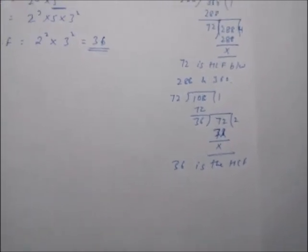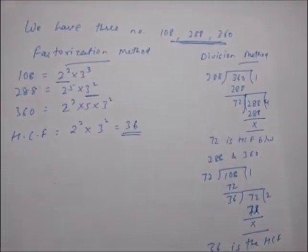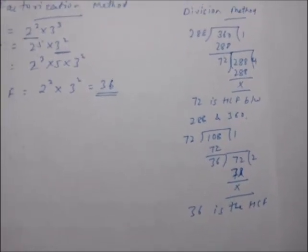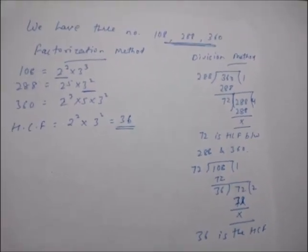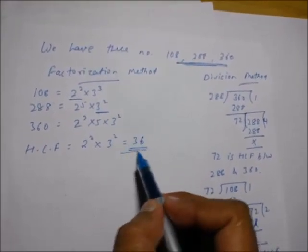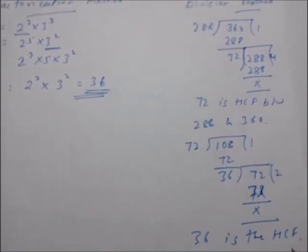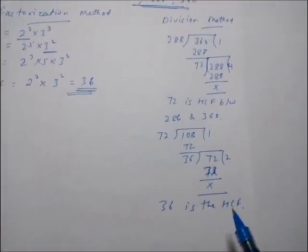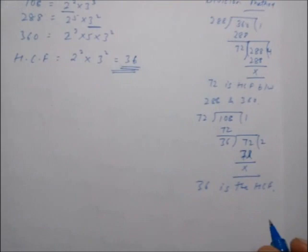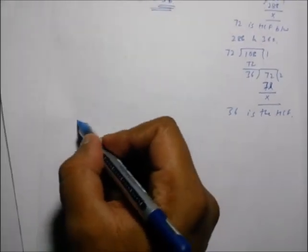As you can see, we calculated the HCF between three numbers by these two methods. The factorization method is quite the shortest, but the division method is also a good one. That is all about the HCF. Now let's come to LCM.